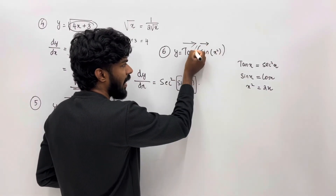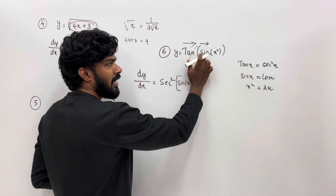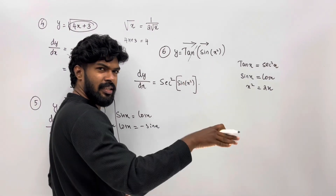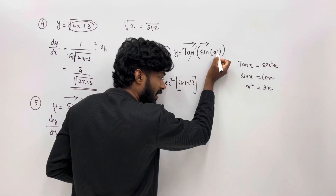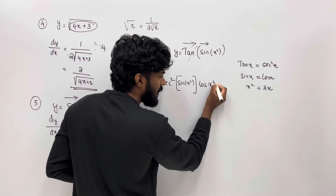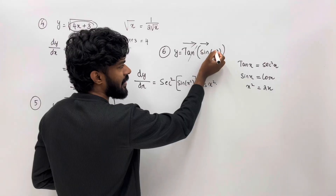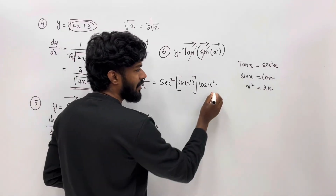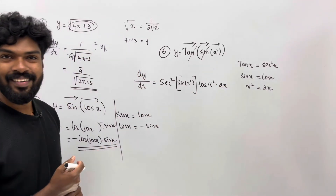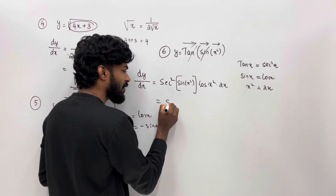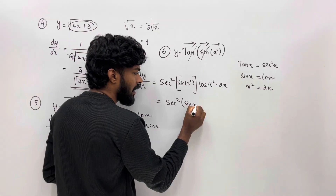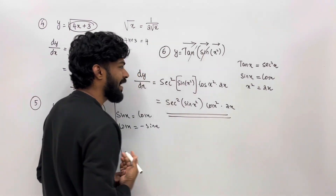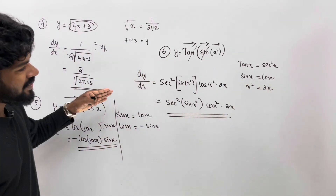This is tan — you can change sin(x²). Sin x derivative is cos x. Sin(x²) derivative is cos(x²). Then x² is the derivative of 2x. So the final answer is cos(x²) times 2x.